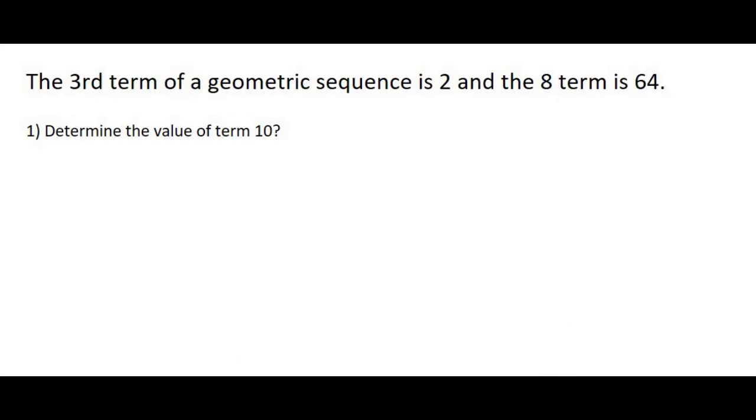They tell us that the third term of a geometric sequence is 2, so that statement alone has so much information. So we pull out our geometric sequence formula and you just fill things in. We know what TN means - it means the value. A is term 1, R is the ratio, and N is the position.